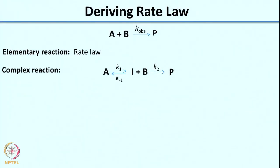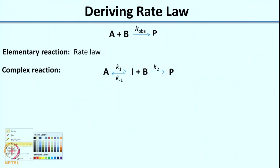In today's lecture we look at how we derive rate laws. Consider a reaction where A plus B gives product. We can measure the change of concentration of A over time experimentally, and also the change of concentration of B over time. There is a rate constant that can also be experimentally measured — that is why we call it K observed.